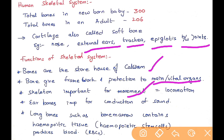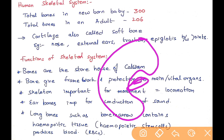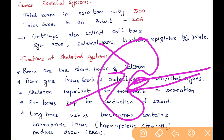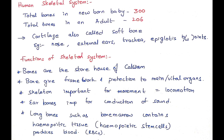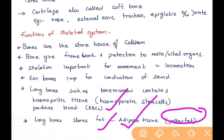The functions of the skeletal system: bones are the storehouse of calcium; bones give a framework and protection to vital organs; the skeleton is important for movement and locomotion; ear bones are important for conduction of sound. Long bones contain hemopoietic tissues in the bone marrow, which help in production of hemoglobin and red blood cells. Long bones also store fat in the form of yellow fat in adipose tissue.